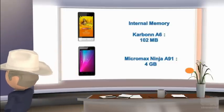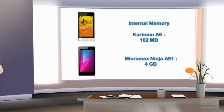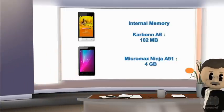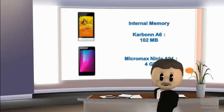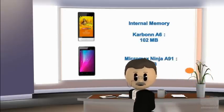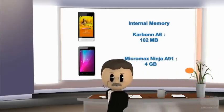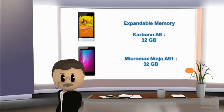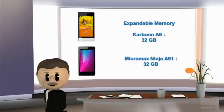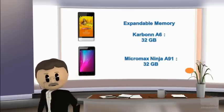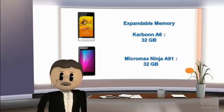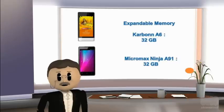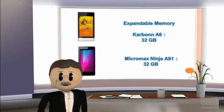Internal memory of Karbonn A6 is 0.102 GB, and internal memory of Micromax Ninja A91 is 4 GB. Expandable memory of Karbonn A6 is 32 GB, and expandable memory of Micromax Ninja A91 is 32 GB.